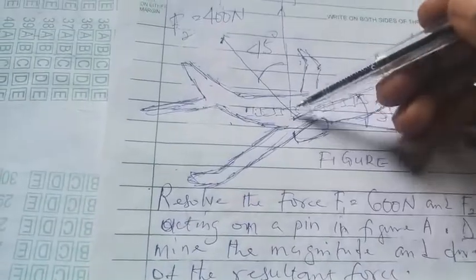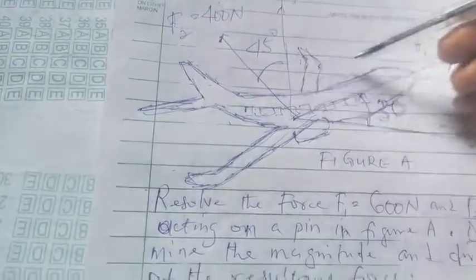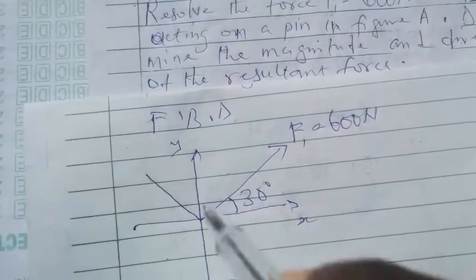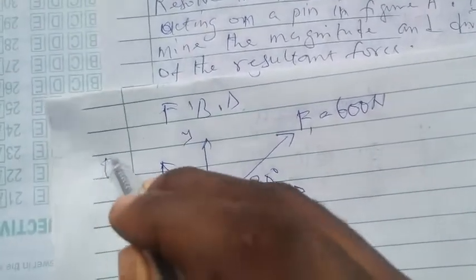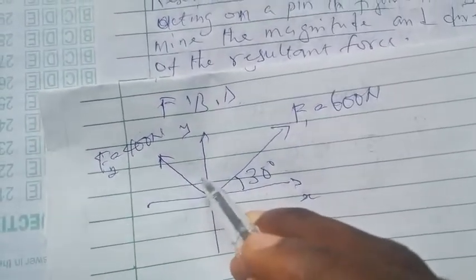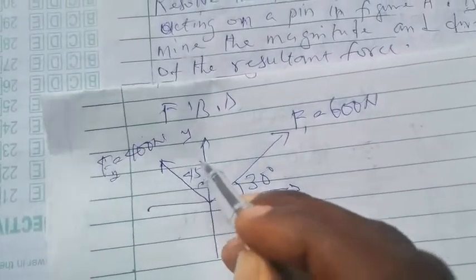Also we have this other force F2 400 Newton at 45 degrees to the vertical. So we'll have force F2, F2 opposite 400 Newton, 45 degrees.